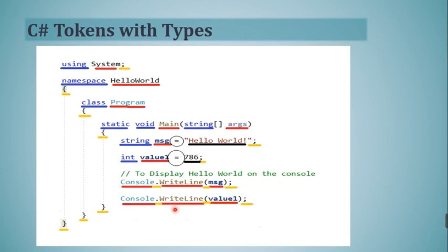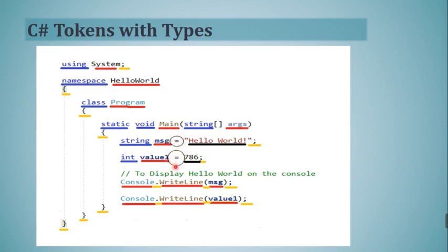Yellow color is used to differentiate punctuators from other tokens. Semicolons and curly brackets are underlined in yellow — these are separators or punctuators. Next, there are only two circles enclosing equal signs — this is the operator. The dot is also used as a separator or operator. The assignment operator (=) assigns the string 'Hello World' to the identifier 'msg', and the value 786 is assigned to 'Value1'.